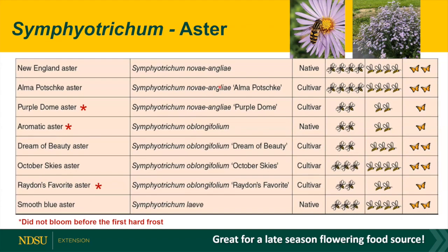For asters, we tested some native ones — New England aster, Symphyotrichum oblongifolium, and smooth blue aster. The top performers were New England aster and Alma Pötschke, and they also did really well with honeybees. October Skies and smooth blue aster also did fairly well. The ones with a red star indicated they weren't able to bloom before we had our first fall hard frost — that's part of the problem with some of the asters, as it takes quite a bit of time for them to complete all their flowering.